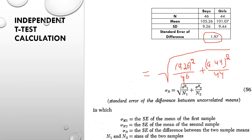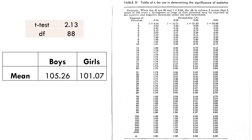After the calculation, the final result for the standard error of difference is 1.97. Now that we have the standard error of difference, we apply the basic formula for the independent t-test: mean 1 minus mean 2 divided by the standard error of difference.